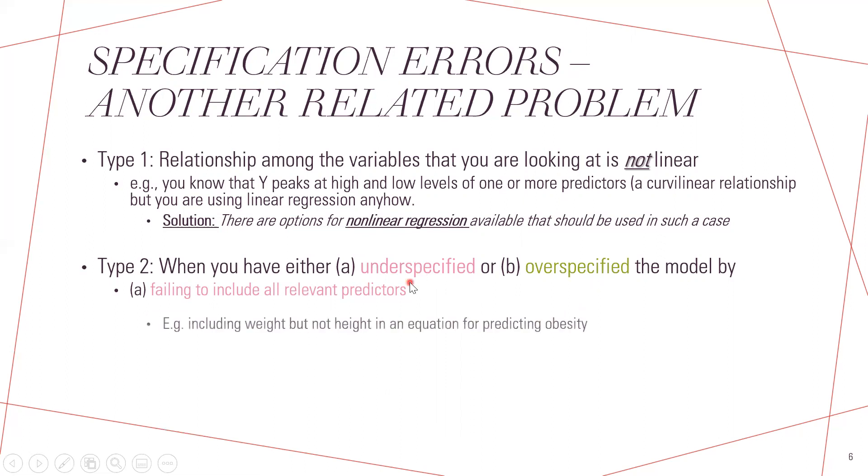Now what is an under-specified model? It's when we fail to include all the relevant predictors. For example, our regression model is predicting obesity, so we take the weight, but not the height. So that's a kind of under-specified model.